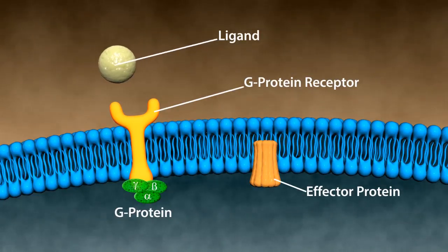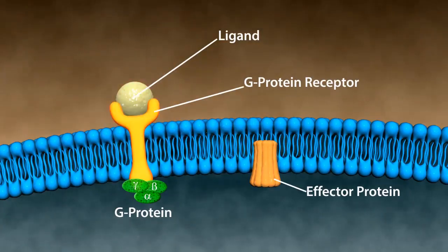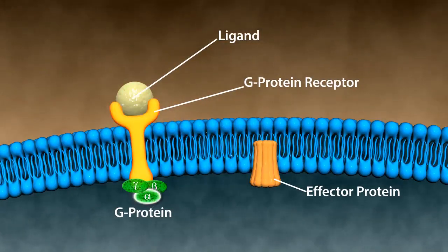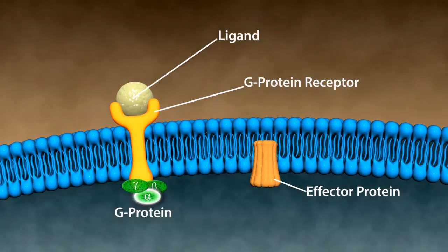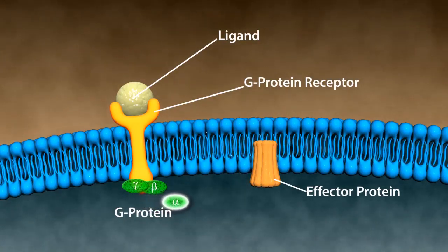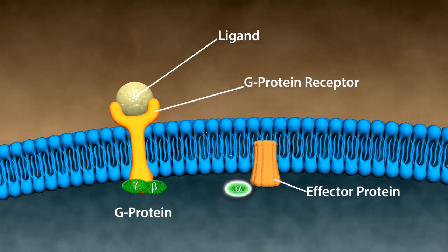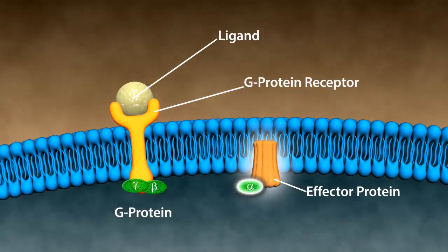With the G-protein-coupled receptor, first the ligand binds to the receptor, which causes structural changes in the receptor and in turn changes the shape of the G-protein, which reduces GTP to GDP. This leads to the separation of the alpha subunit from the beta and gamma units, which in turn activates other enzymes and effector proteins.